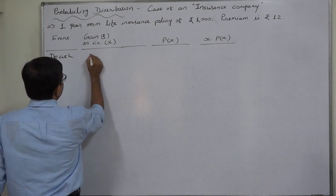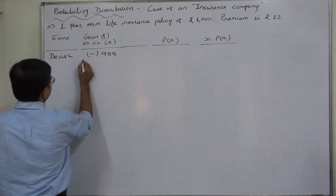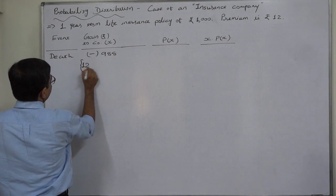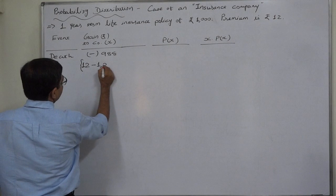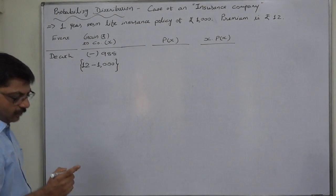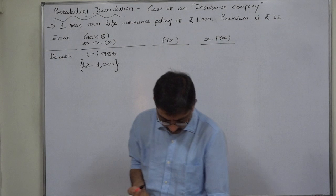The event death, the gain will be minus 988. How? 12 rupees premium is received and 1000 rupees death claim is paid. And what is the probability of this type of incidence?